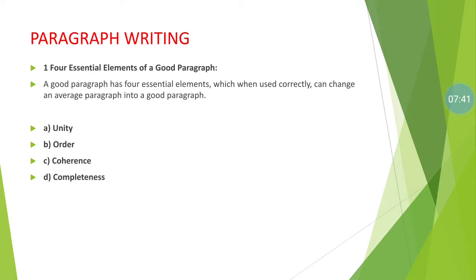You have to first arrange all the supporting sentences in a proper, systematic order — chronological order, order of importance, or logical order — and then put these ideas into the paragraph. A well-ordered paragraph allows the reader to follow along easily. Order helps the reader grasp your meaning and avoid confusion.